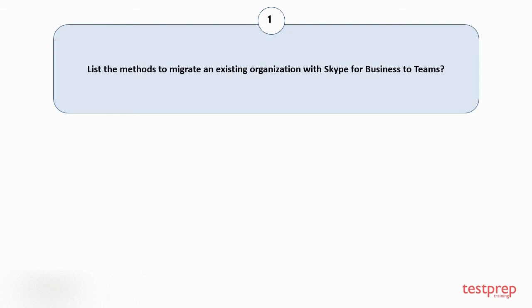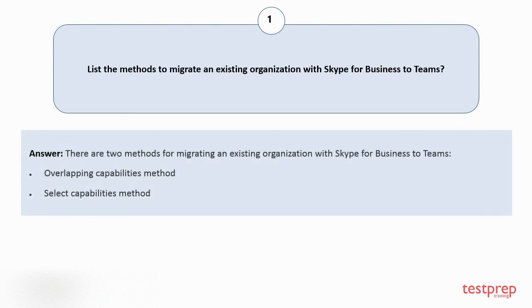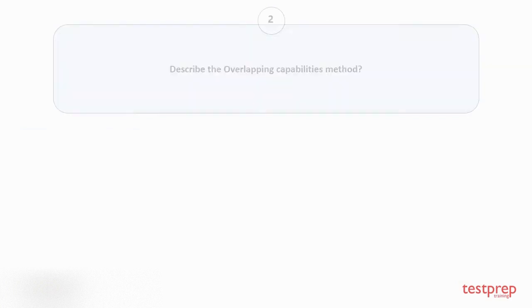Question number 1: List the methods to migrate an existing organization with Skype for Business to Teams. There are two methods for migrating an existing organization with Skype for Business to Teams: 1. Overlapping capabilities method. 2. Select capabilities method.